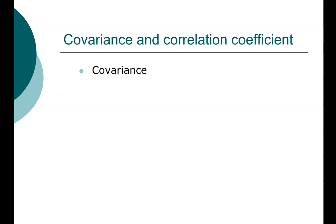First, we're going to look at covariance. Covariance measures whether or not when one stock outperforms its expectation, how does the other stock perform? The other stock can also outperform its expectation or it can underperform its expectation. So it gives us an idea whether or not they tend to move together or whether or not they tend to move in opposite directions.